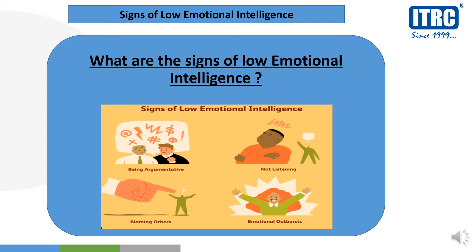Other signs include blaming others — they always blame others even when the fault is theirs. And emotional outbursts — they may start crying or shouting. In a nutshell, we can say that low emotionally intelligent persons are not able or not capable of managing and controlling their emotions.